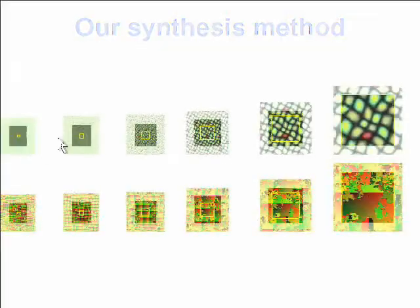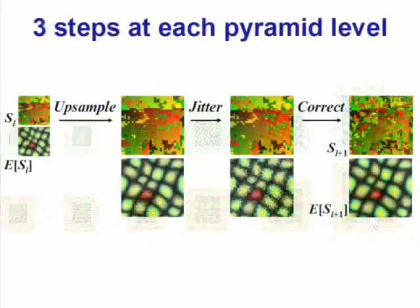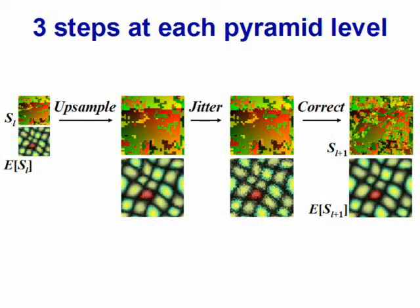Let's examine how synthesis works. We generate the texture using a coarse-to-fine pyramid, storing the coordinates of the exemplar pixels. At each level, we upsample the coordinates, jitter them, and correct them by matching exemplar neighborhoods.